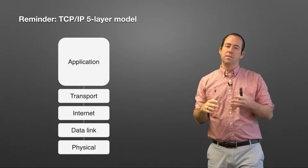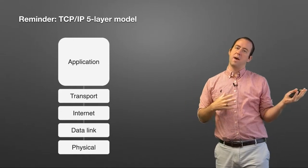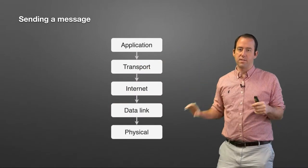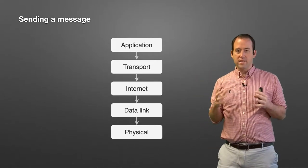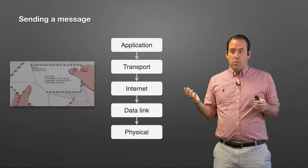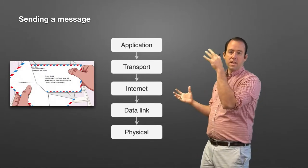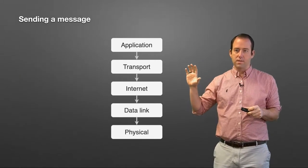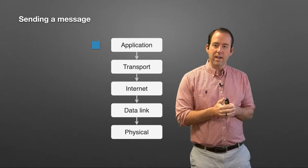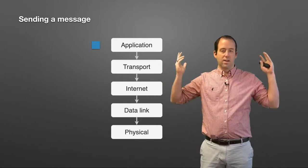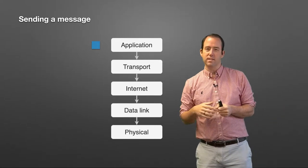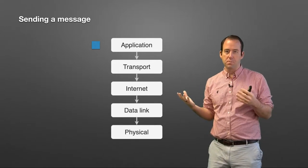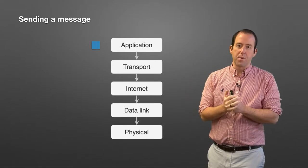What model you use doesn't really matter — the communication happens the same either way. When a message needs to be sent, we've got those envelopes where things are getting packed inside each other. Our message comes along and wants to be sent across the network — let's say it's a picture or an HTTP GET request. The application puts together the request using the application layer protocol.